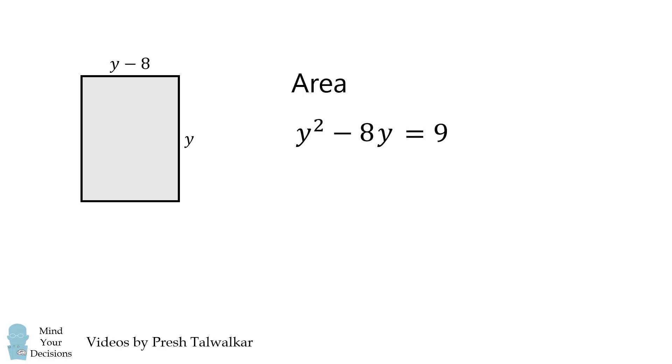We then distribute the y term and subtract 9 from both sides. We factor the quadratic equation, and we get two potential solutions: y is equal to 9 and y is equal to negative 1. Since we're dealing with lengths, we want a positive value, so we retain y is equal to 9.